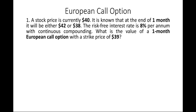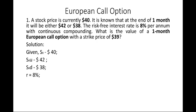The example is as follows: a stock price is currently $40. It is known that at the end of one month it will be either $42 or $38. The risk-free interest rate is 8% per annum with continuous compounding, and we have to determine the value of a one-month European call option whose strike price is $39.